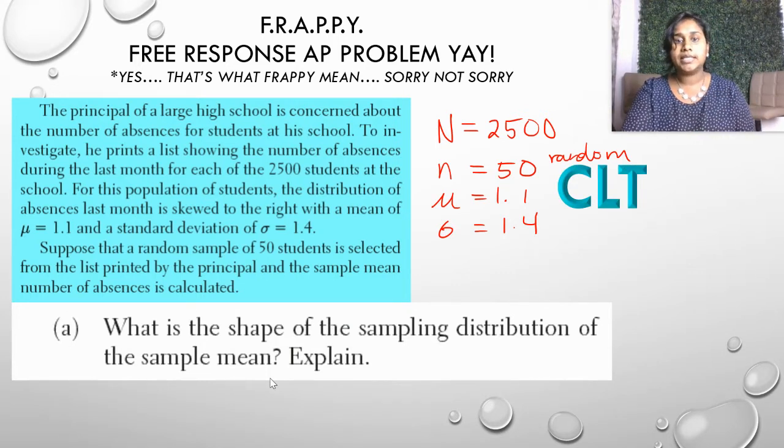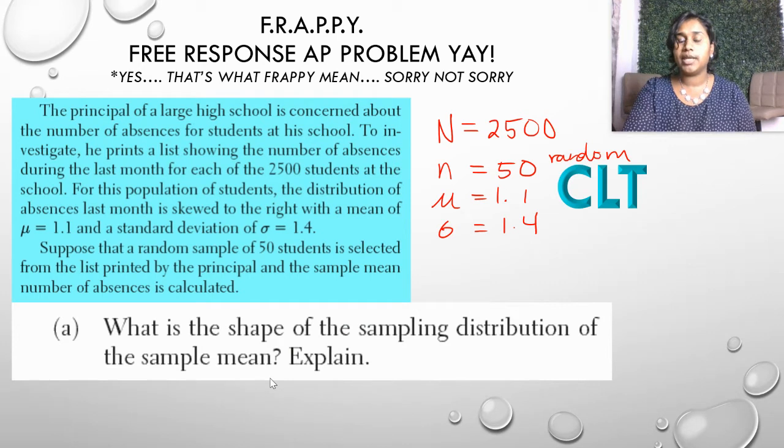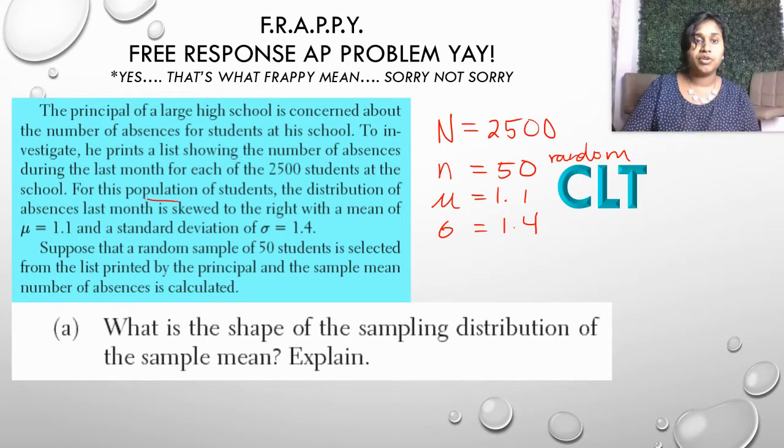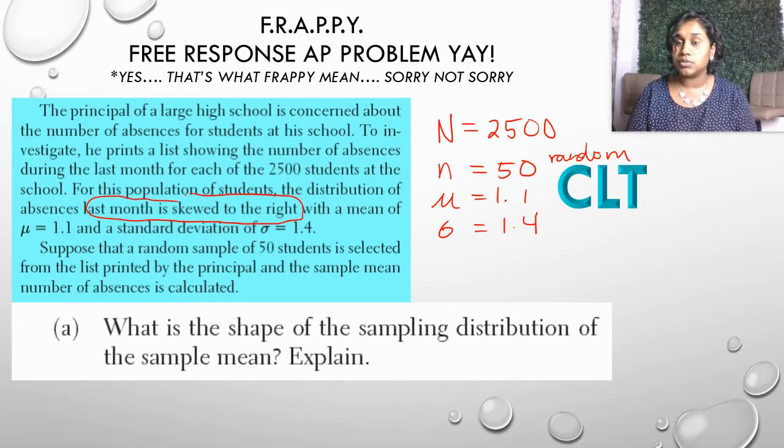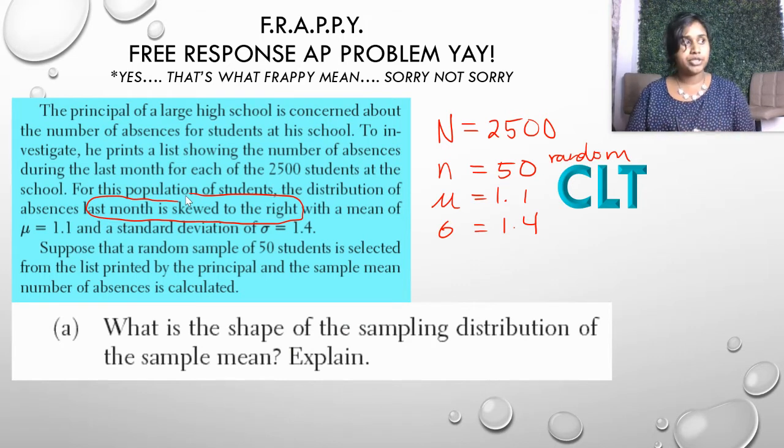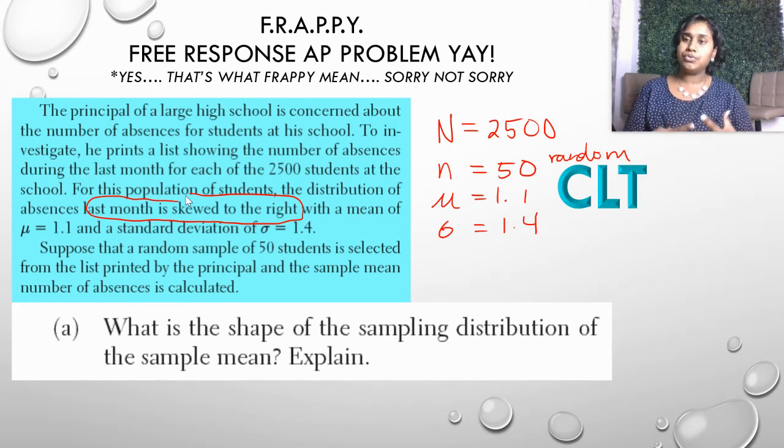Otherwise, I can remind you, CLT, that central limit theorem is also going to play into effect. And how do I know? Well, first of all, they did not tell me this information was normal. In fact, they said that it was skewed to the right. Because they said that it was skewed to the right, I have to think one step further. Not only because I'm taking a sampling distribution is it going to start to normalize, but it's because of that central limit theorem where n has to be greater than or equal to 30.